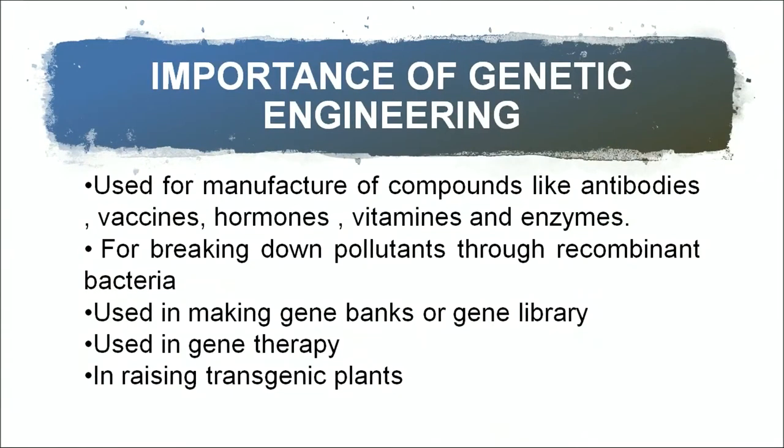Genetic engineering is also used for breaking down pollutants by making recombinant bacteria. Nature has created pathways for the breakdown of pollutants, and we can select bacteria with metal resistance genes, recombine them, and use them to clean the environment of those pollutants.